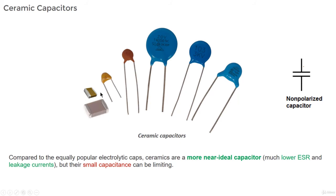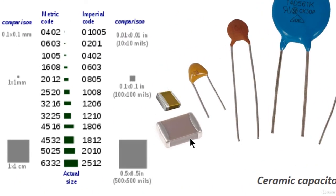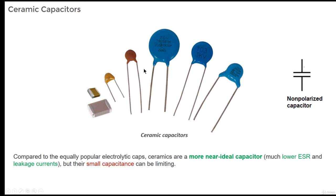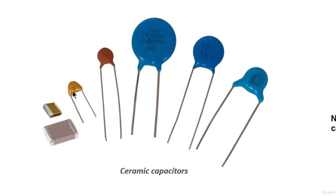A surface mount ceramic cap is commonly found in a tiny 0402, 0603 or 0805 package. Through-hole ceramic capacitors usually look like small, commonly yellow or red bulbs, with two legs of equal length.